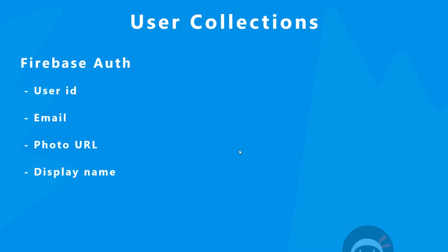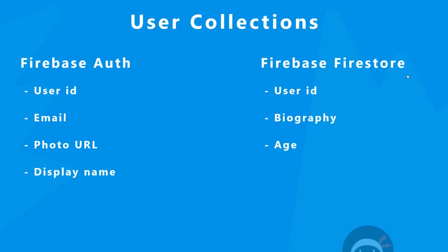We're using Firebase Auth to sign users up. On the auth service we can store different information about that user — a user ID, email, photo URL, and display name — but if we want to store any custom data, for example a biography, we need to store that in a separate location. In our case we're going to store it inside the Firestore database inside a users collection.